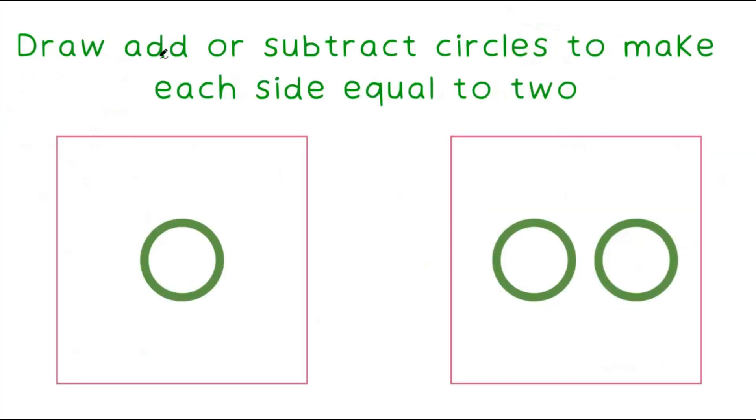Draw, add or subtract circles to make each side equal to 2. In our first square we have one circle. In our second square we have 2. Do you think we have to draw any more circles? Very well done! Then we have to draw one more circle in our first square to make both squares equal to the number 2.